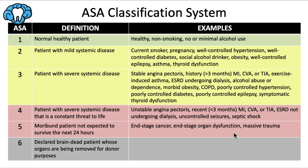Just for completeness, ASA 6 is a declared brain-dead patient whose organs are being removed for donor purposes. You won't be getting a patient case at this level. Most cases you'll encounter will either be ASA 2 or 3.